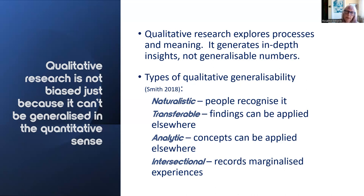Brett Smith has suggested four different types of qualitative generalisability. One is naturalistic, where people recognise the research results as capturing their own and others' experiences. Another type is transferability, which is the extent that results are transferable to other settings and contexts. There's also analytic generalisability, where the concepts generated through the research are useful for understanding more widely — it's the theories that are generalisable, not the specific context or populations. And finally, there's intersectional generalisability, which applies to research that records the particulars of historically oppressed or colonised people and communities and their social movements of resistance.